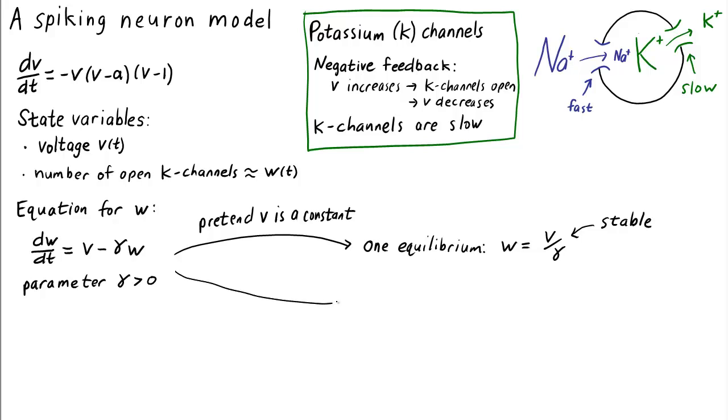What the equation, dW/dt equals V minus gamma times W, does is make W evolve toward the number V divided by gamma. You can think of V divided by gamma as a target for W that W is chasing. Since V is not really a fixed number, but instead evolves with time, this target will be a moving target for W.